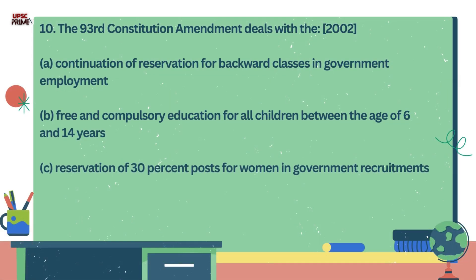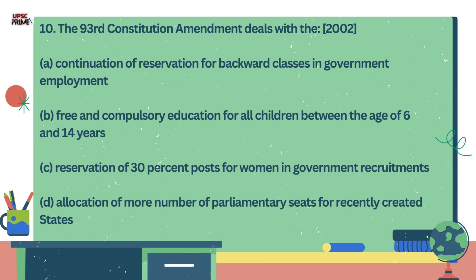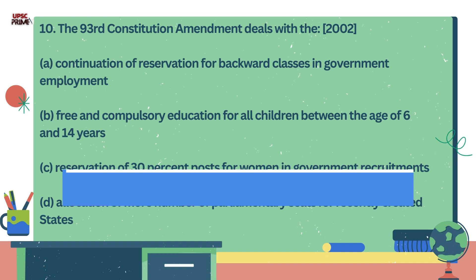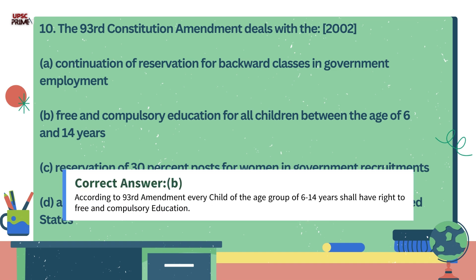Question number 10. The 93rd Constitutional Amendment Act deals with: A. Continuation of reservation for backward classes in government employment. B. Free and compulsory education for all children between 6 and 14 years. C. Reservation of 30% posts for women in government recruitment. D. Allocation of more number of parliamentary seats for recently created states. The correct answer is B — according to the 93rd Amendment Act, every child of the age group 6 to 14 years shall have the right to free and compulsory education.